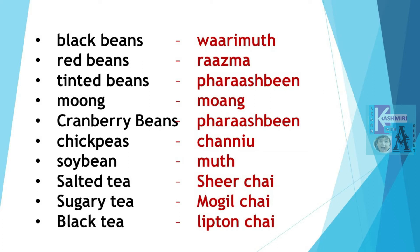Red Beans are Razmah. Tinted Beans are Farash Beans. Farash Beans. Moong Daal is Mong. Mong.